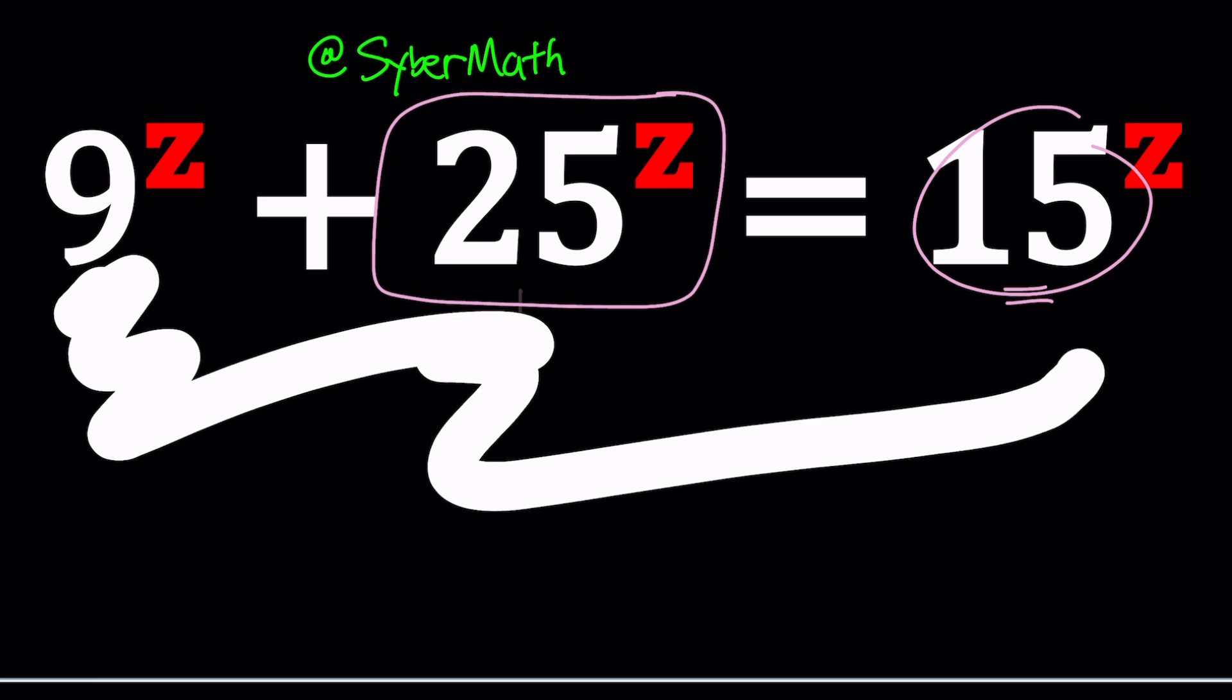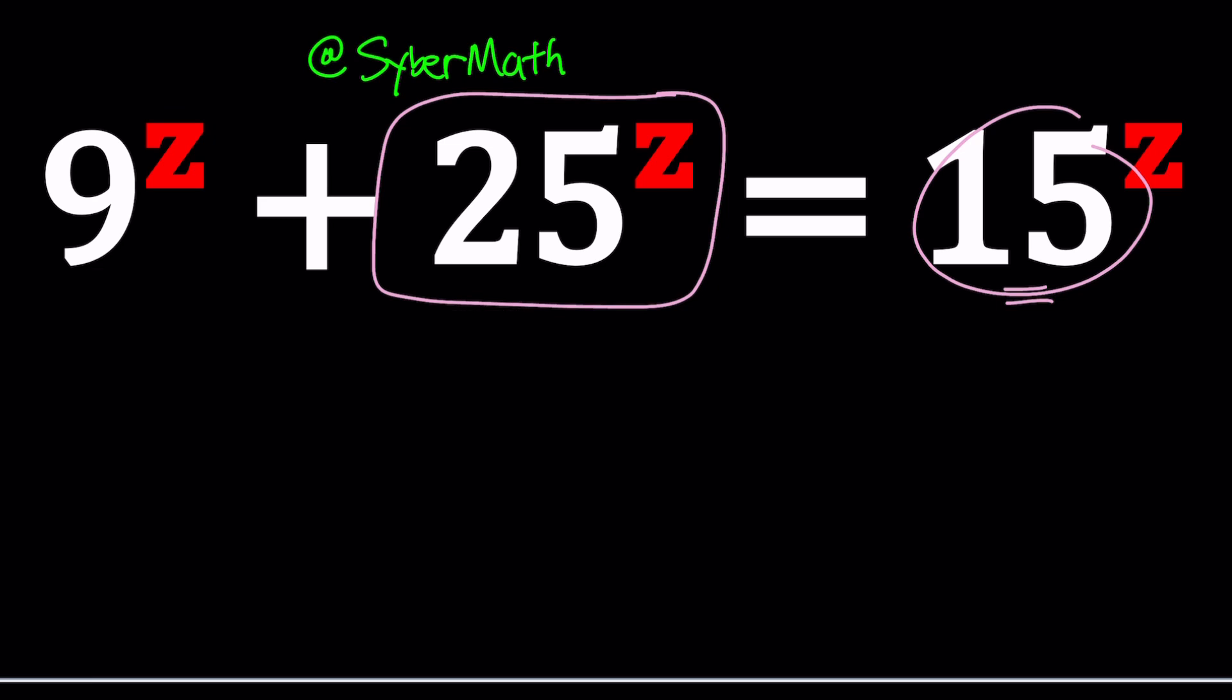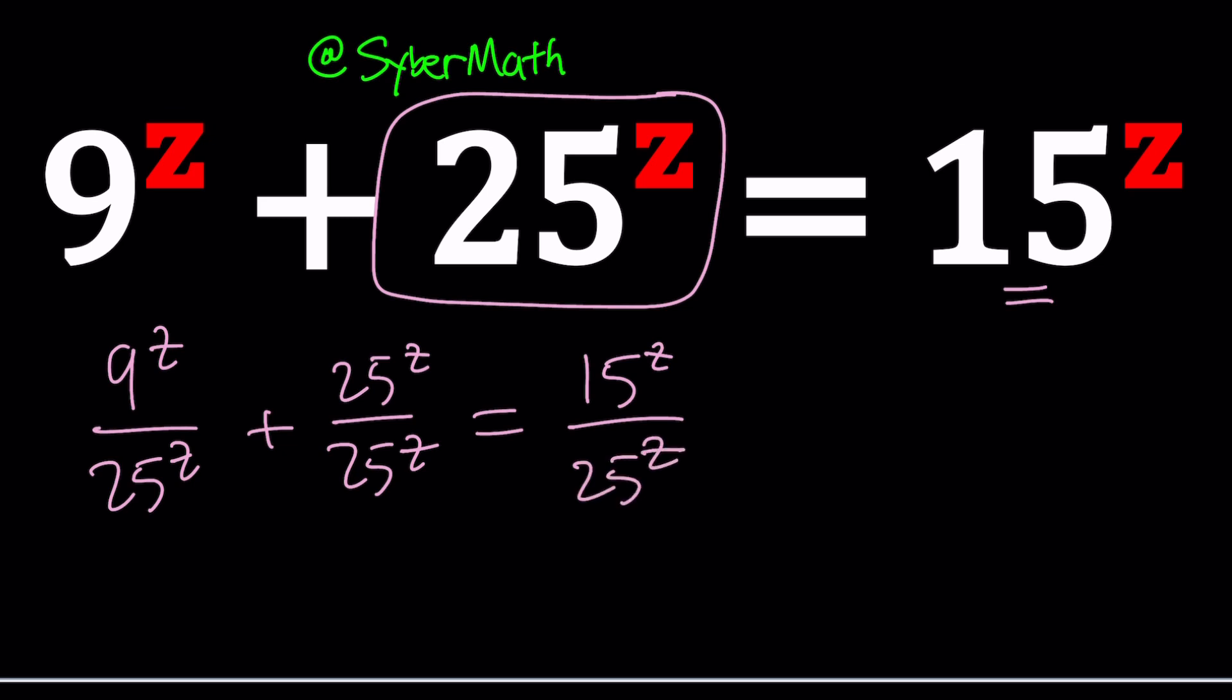Let's go ahead and get into the solution. So we're going to go ahead and divide everything by 25 to the power Z. 9 to the Z divided by 25 to the Z. 25 to the Z divided by 25 to the Z. You probably know what it is, but I just wanted to show you that I'm actually dividing everything by that. And now this is one, right?